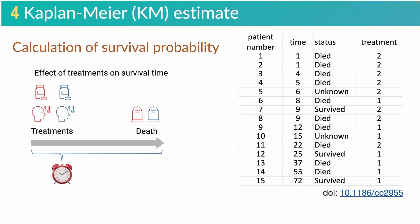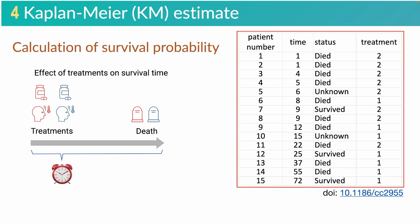The KM curve is a survival probability curve, so first of all we will calculate the survival probability through an example. This example investigates the effect of two treatments on the survival time of a group of patients with a disease. This is the data of the study. The first column is the patient number, and the second column is the time of events. The next column is the event of interest, including died, survived, or unknown. The last column is the treatment method, and there are two treatment methods: one and two.